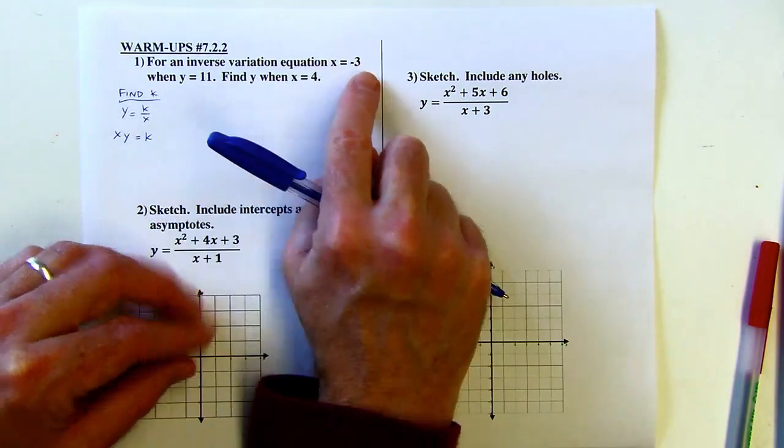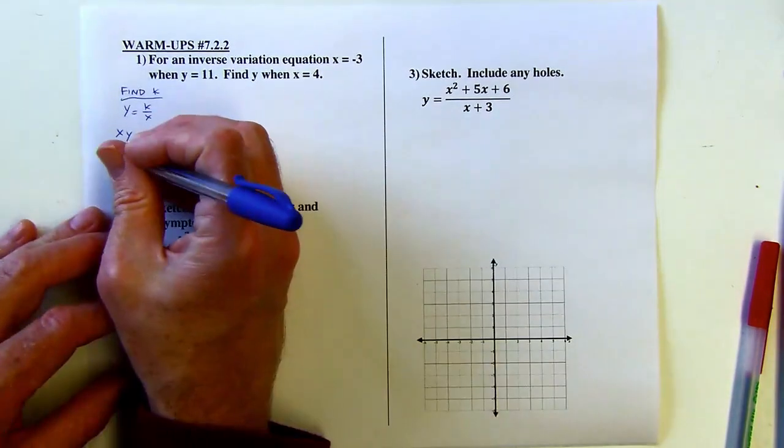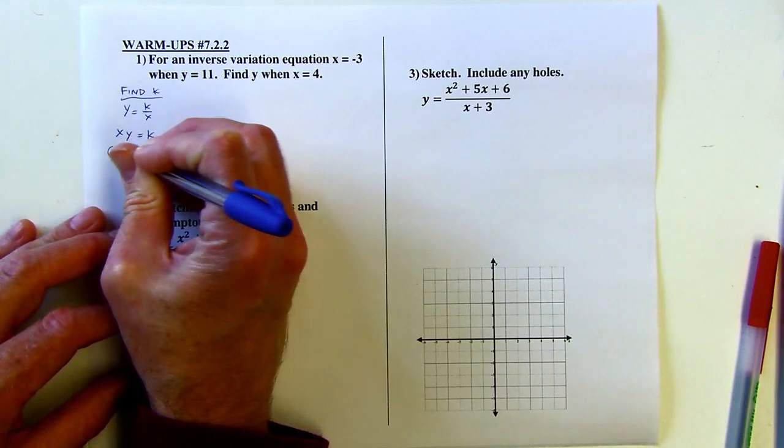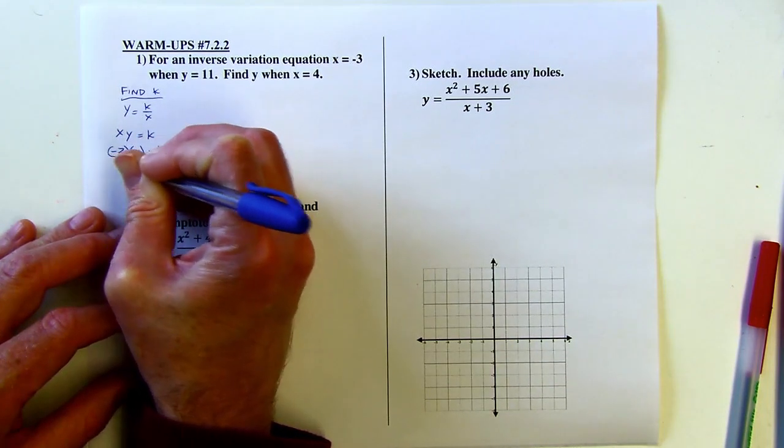So I'm going to use the known pair then. I'm plugging in the negative 3 and the 11 to get k. k is negative 33.